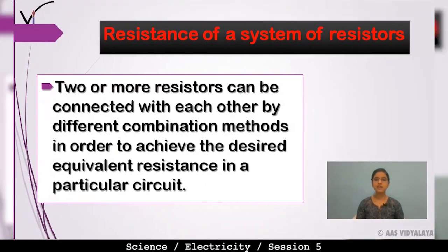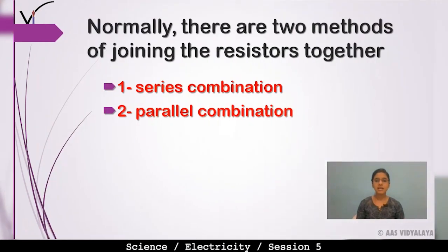Two or more resistors can be connected to each other by different combination methods in order to achieve the desired equivalent resistance in a particular circuit. Normally there are two methods of joining resistors together: first, series combination; second, parallel combination.